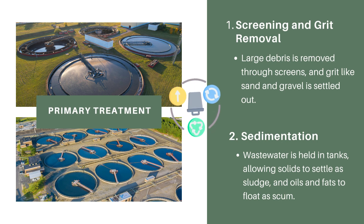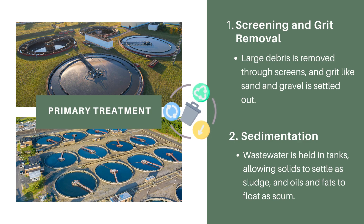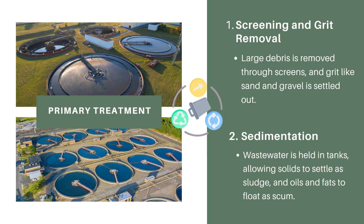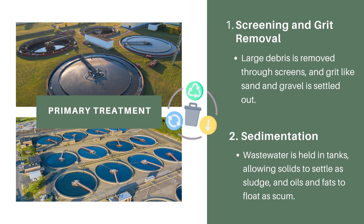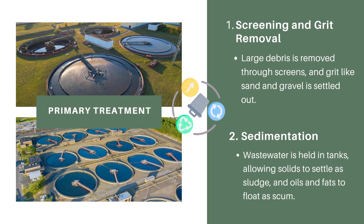For screening and grit removal, let's imagine our dirty water is like soup with too many ingredients. First, we need to take out the big chunks — like vegetables from the soup. We use screens to catch the big stuff and let the water pass through. We also let the sandy and gravelly bits sink to the bottom. In sedimentation, now that we've taken out the big chunks, we let the soup sit. The heavy things, like sludge — the gooey stuff at the bottom of the soup pot — and oils and fats, which float on top, settle down. We can then scoop them out, leaving cleaner water.